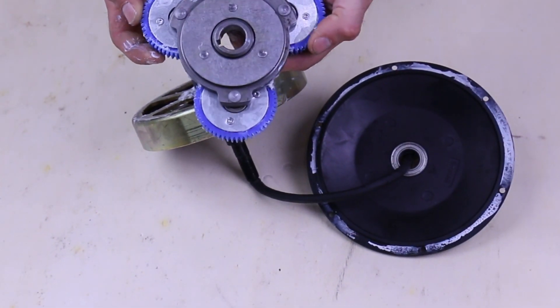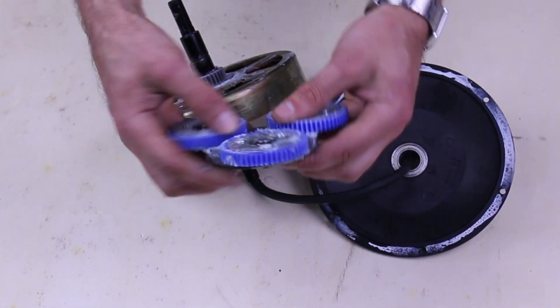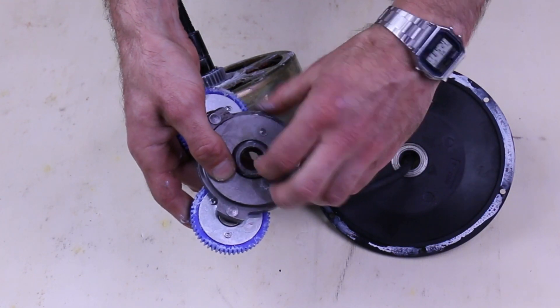This is the removed freewheel assembly and planetary gears. You can see there's a fair bit of grease and there's also this keyway on the shaft.